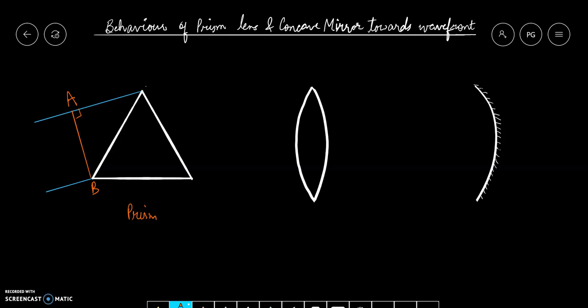Let us suppose AB is my initial wavefront. Then the prism is going to deviate the light rays and this will be the secondary wavefront.